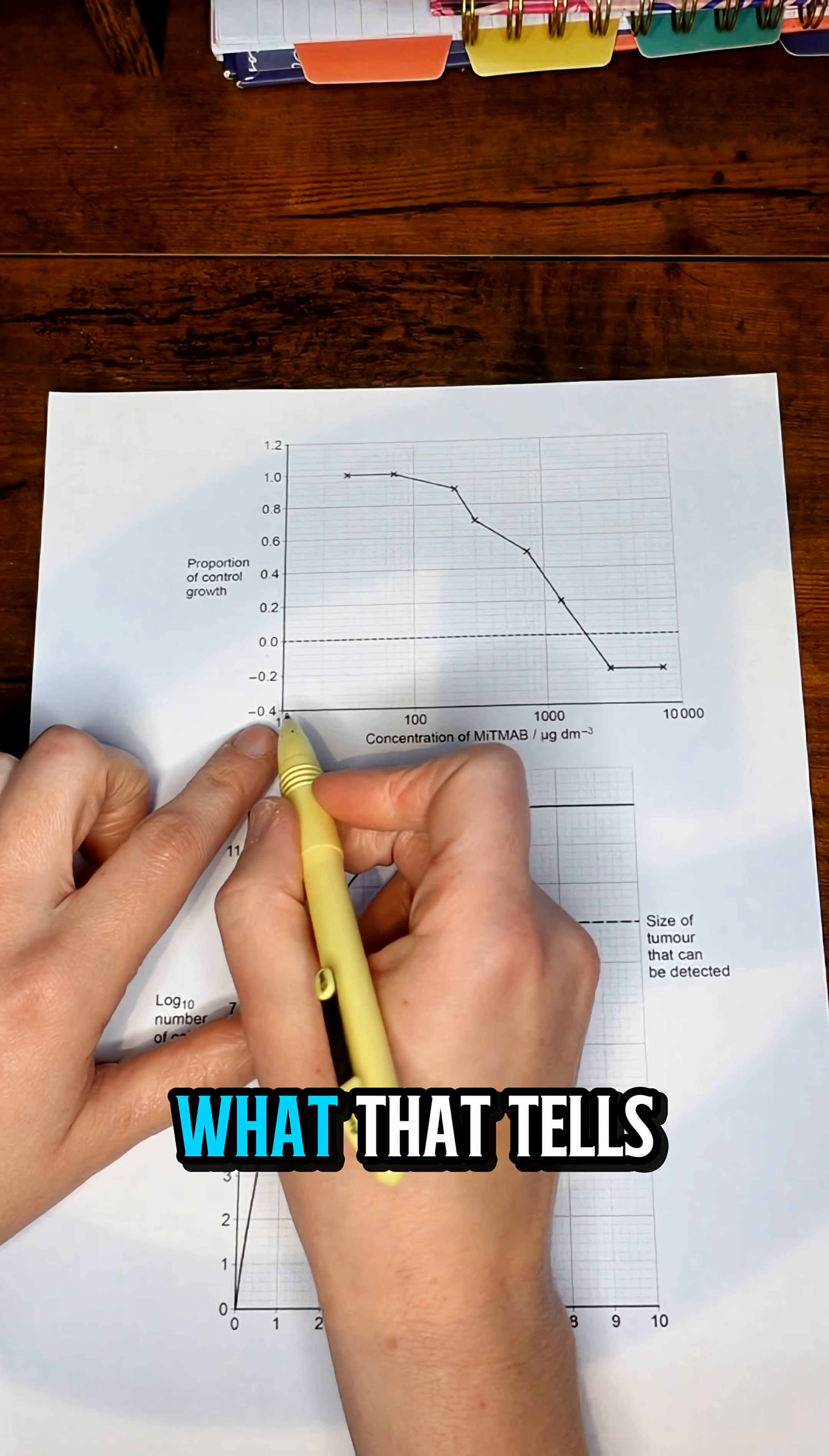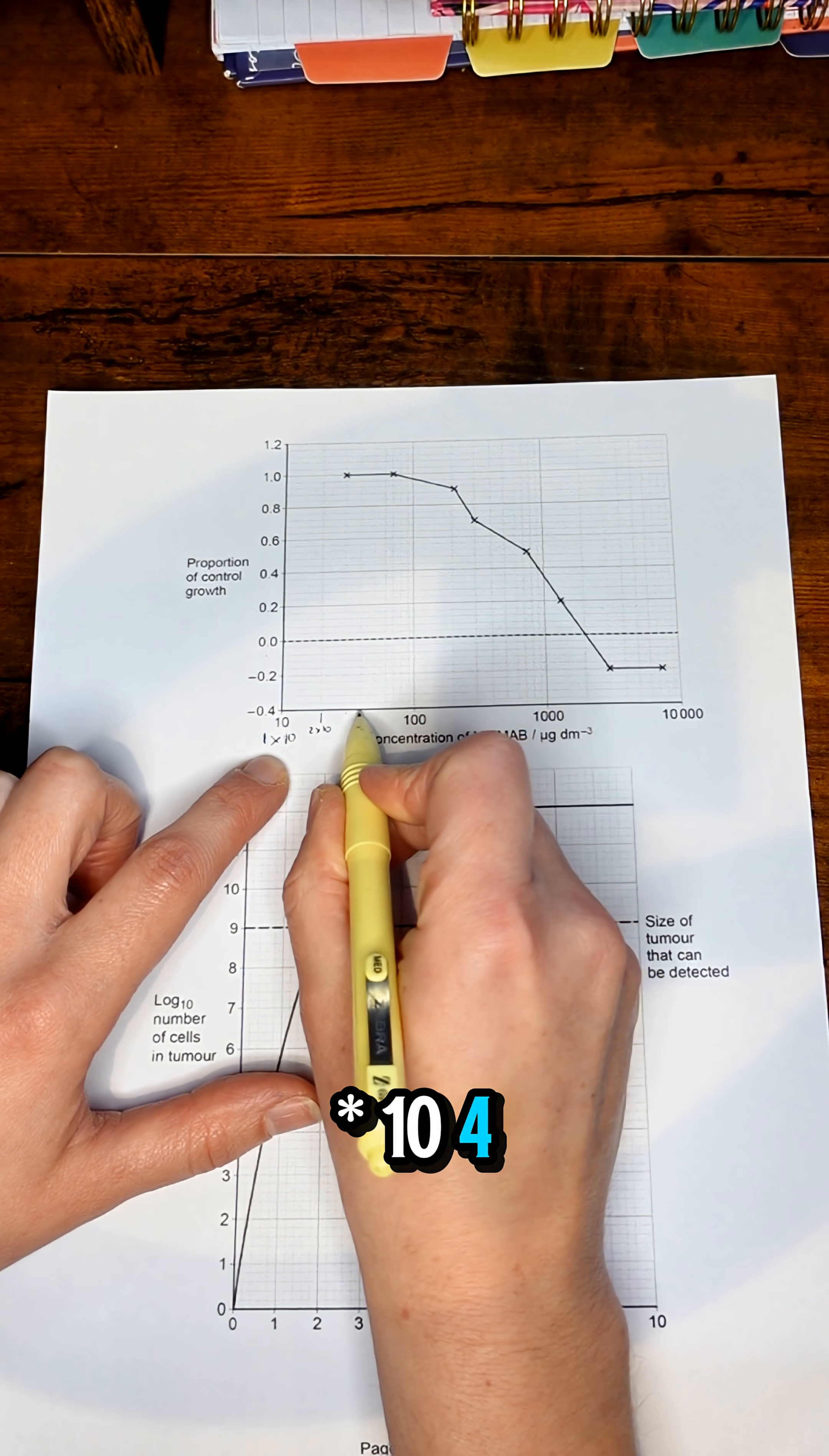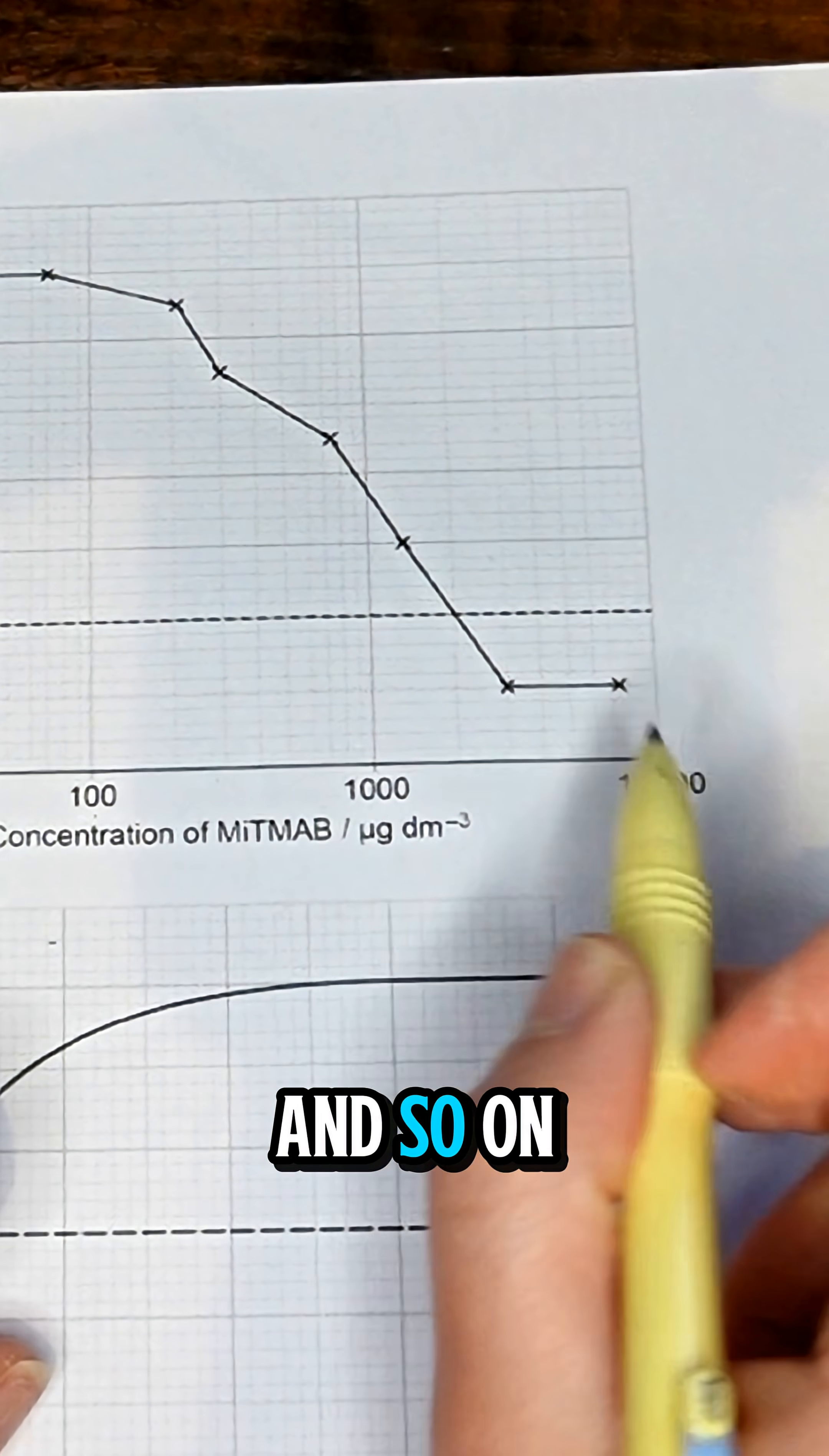Now when you have a log graph like that, what that tells you is you have 1 times whatever you've got on your x-axis. So at this position you have 1×10, and at that line you have 2×10, then 3×10, 4×10, and so on. This would be 1×100, 2×100, 3×100. This would be 1×1000, that would be 1×10,000, and so on.